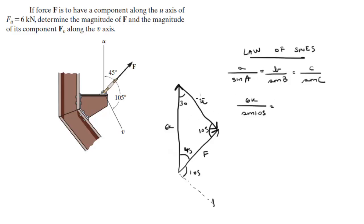Actually, this is not U, sorry. This is V. This is U. Same thing. V over sine of 45. When you solve for V, you get that this is equal to 4.39 kilonewtons.